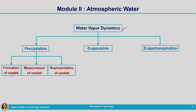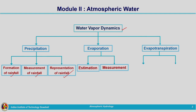After seeing the formation of rainfall, we need to understand how we can measure this rainfall, and then represent it in different forms. After that, we will move on to evaporation. In a similar way, we will have understanding about the estimation and measurement of evaporation, and then the next process covered in this module is evapotranspiration — again, its estimation and measurement.